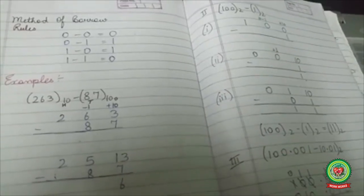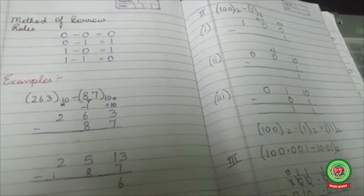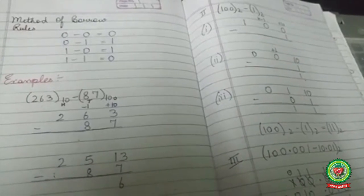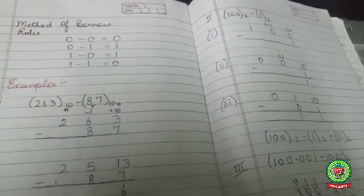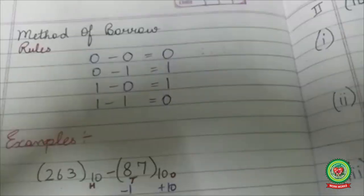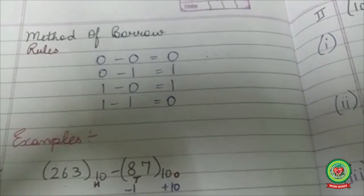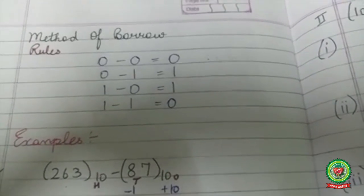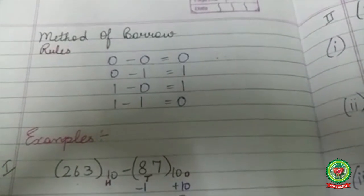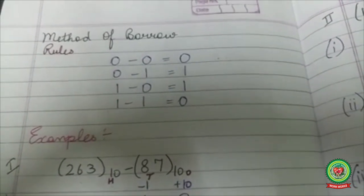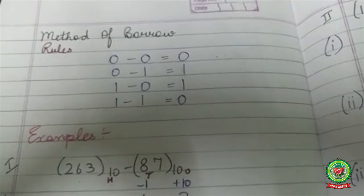Students, today you have learnt binary subtraction with the method of borrow on decimal number system as well as the binary number system. Do practice examples from pages 37 till 41. We will continue the next arithmetic operation in our next session. Thank you.